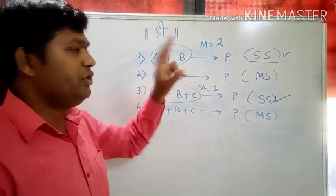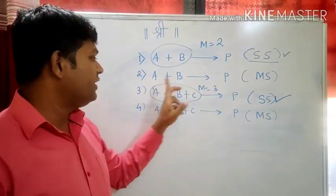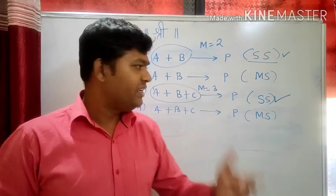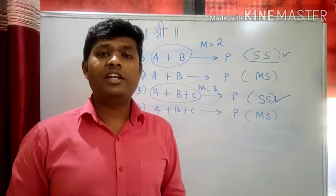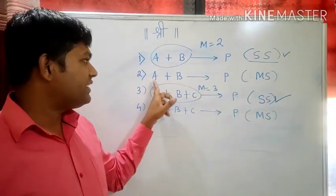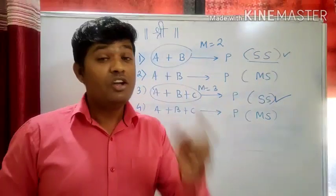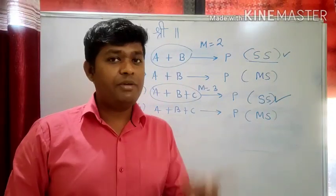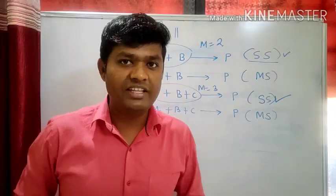So for reaction one, A plus B — two molecules are involved so molecularity is 2. In reaction three, three molecules are involved — A plus B plus C — so molecularity is 3. For a single step reaction, directly look at the number of molecules. But for a multi-step reaction you cannot say that the number of molecules in the overall equation is the molecularity. For that you have to predict which step out of many is the slow step.